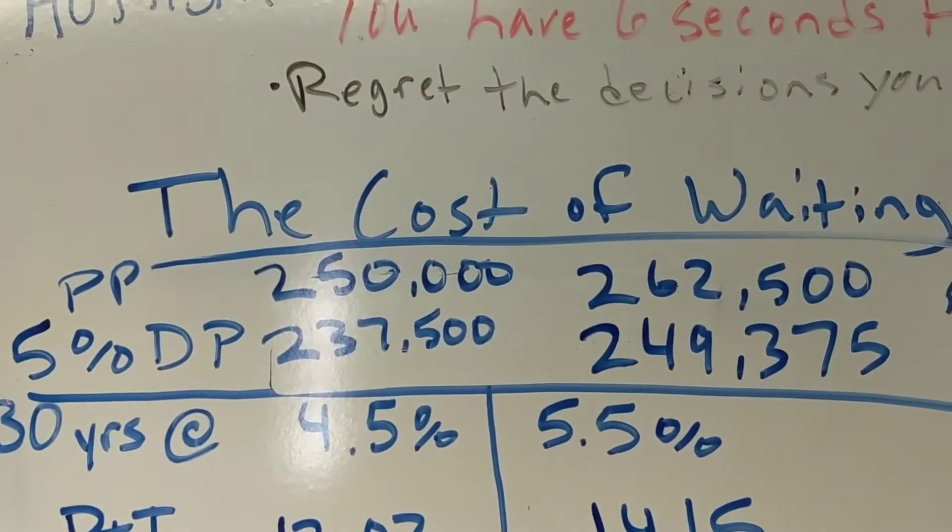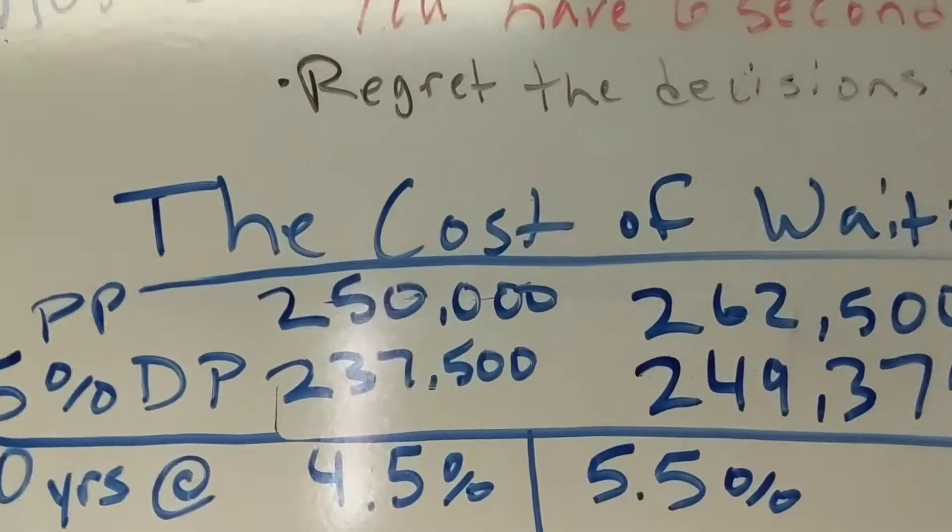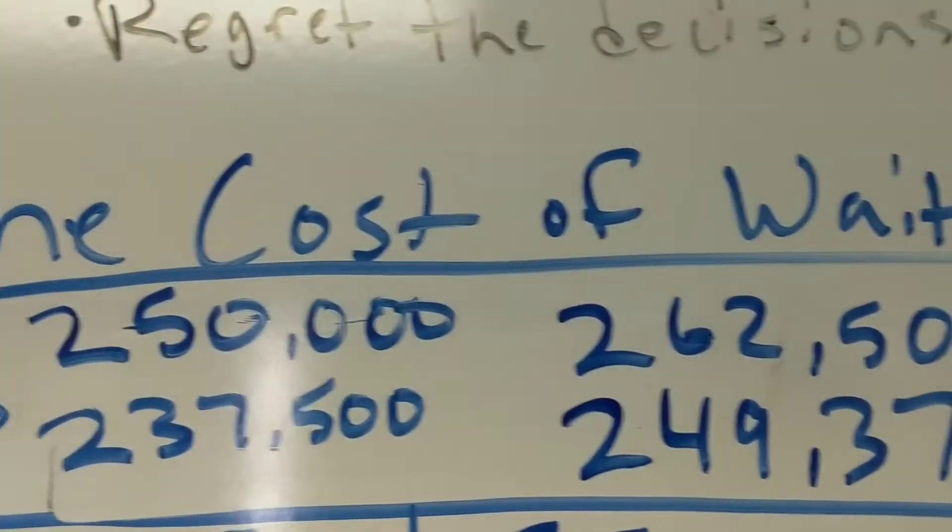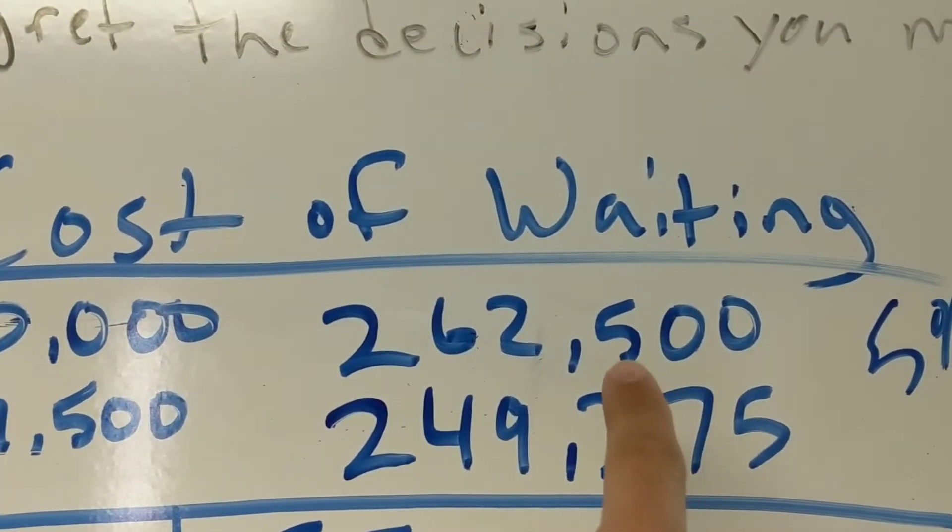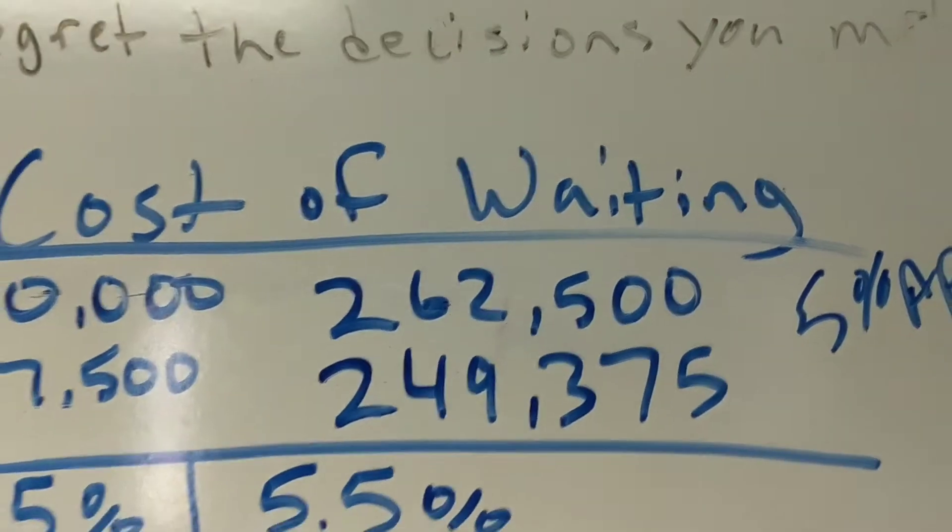So here's our scenario. In an appreciating market, if you can get a home for $250,000 right now and it appreciates 5% over the next year, it'll be worth $262,500.